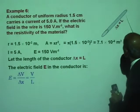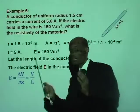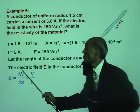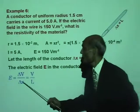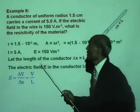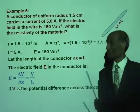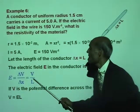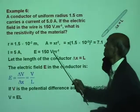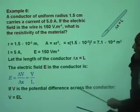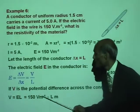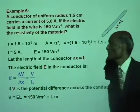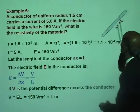Here, delta X is the distance between the ends of the conductor, and delta V is the potential difference between the ends of the conductor. So E equals V over L. If V is the potential difference across the conductor, then V equals E times L. We know the value of E, but we don't know the value of L, so we will leave it as E times L. E is 150 volts per meter multiplied by L meter — that is the potential difference across the ends of this conductor.